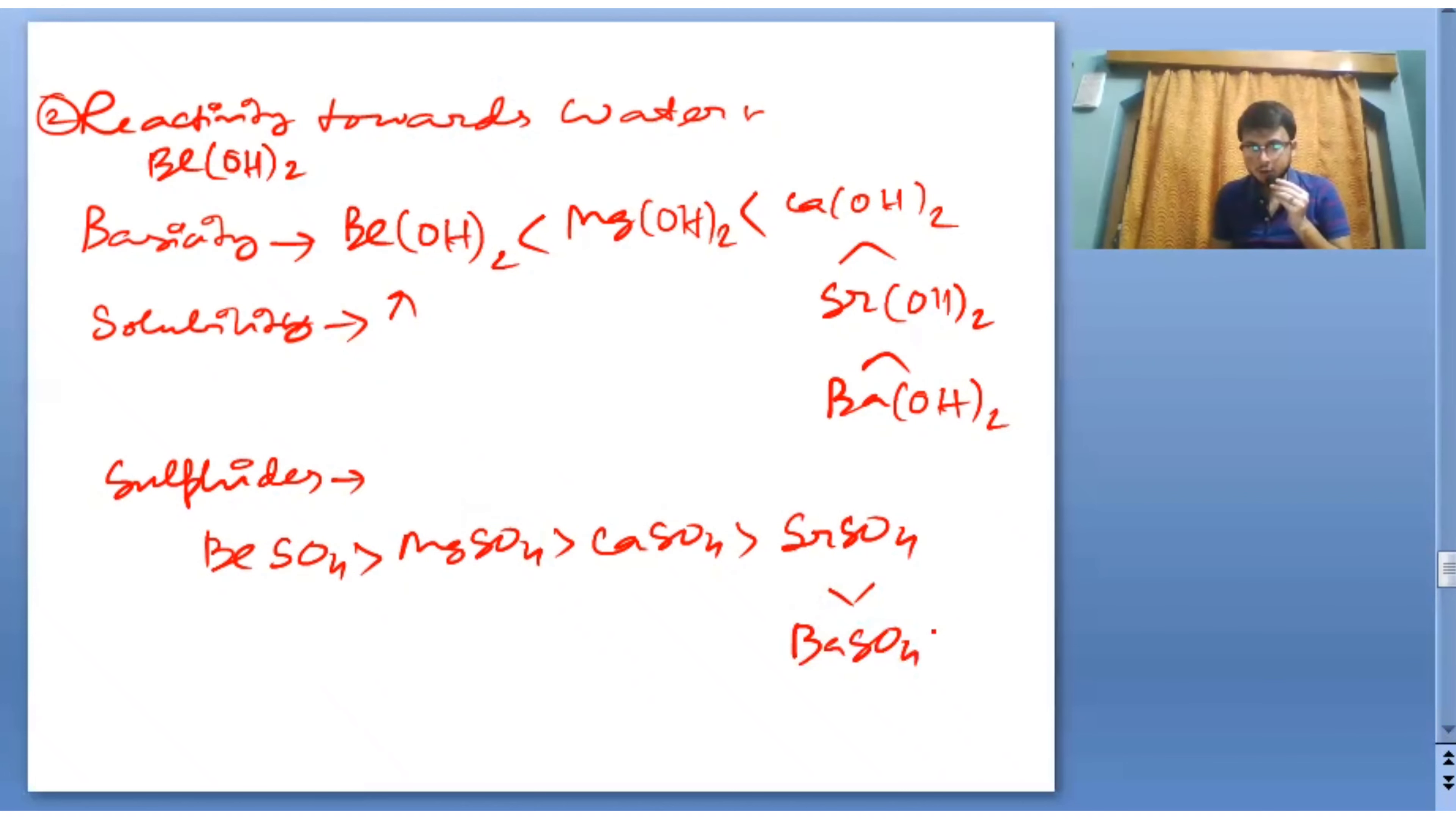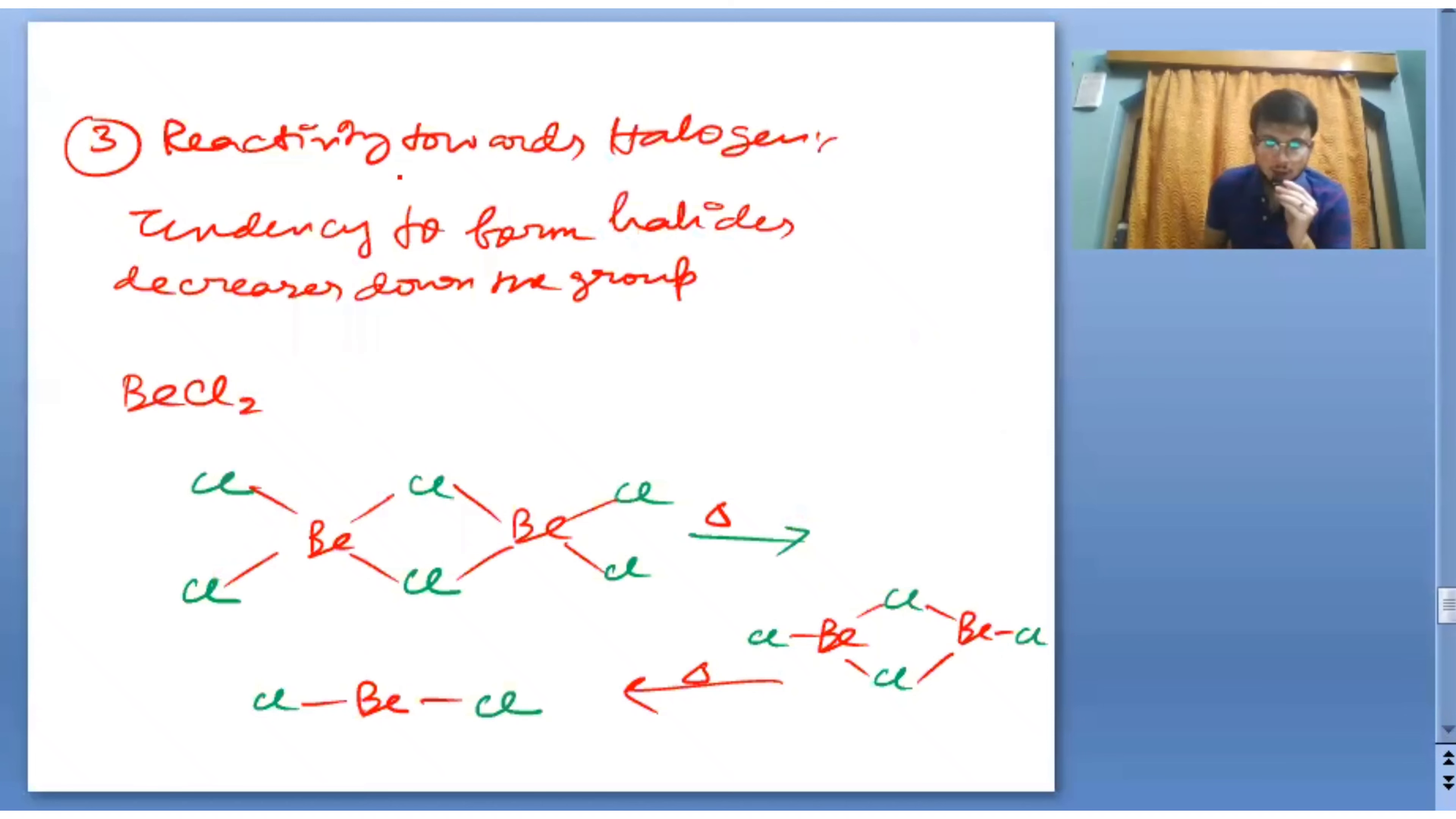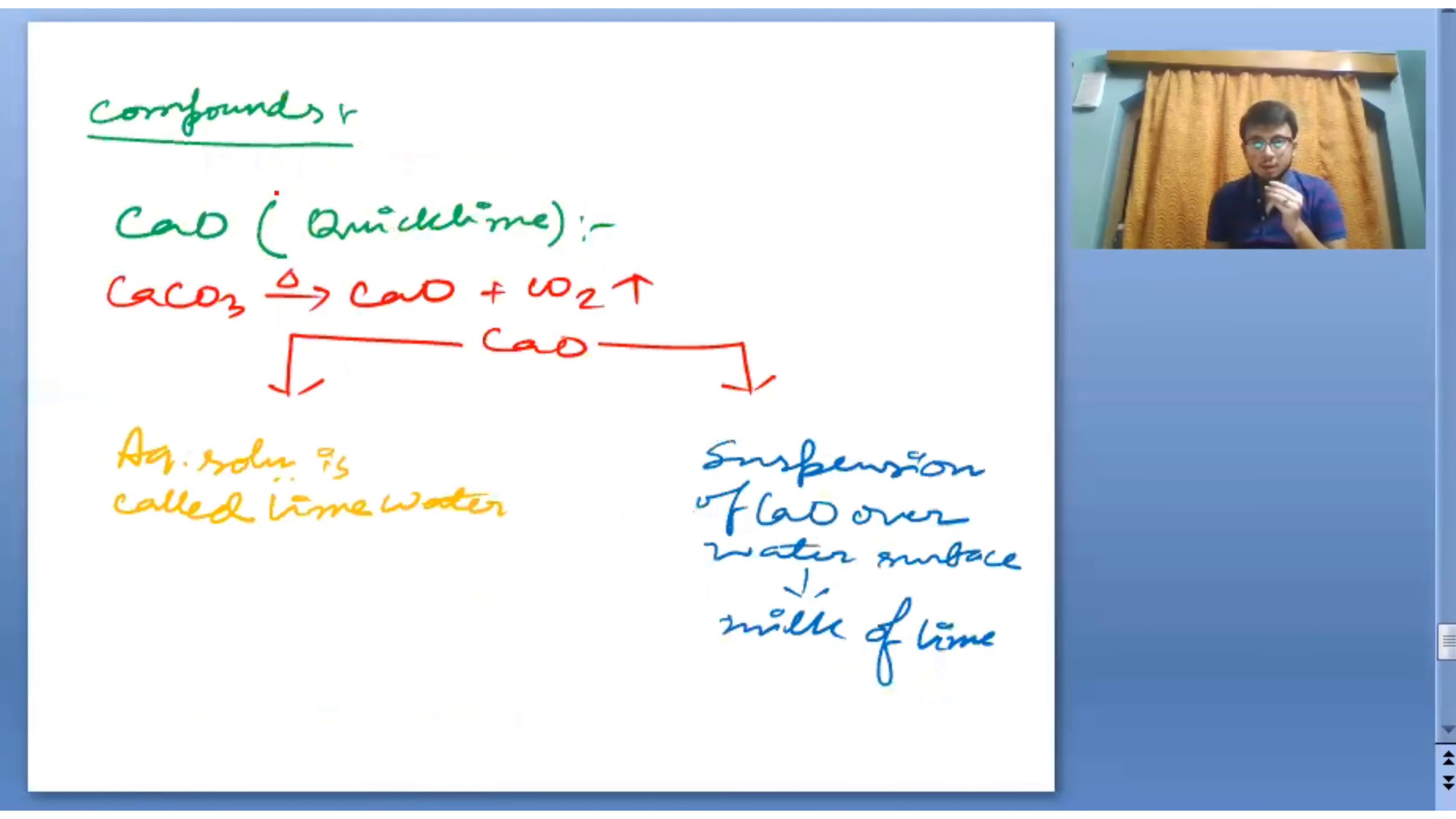And the last compound is insoluble. Next is reactivity towards halogen. Tendency to form halides decreases down the group. Here BeCl2 is special because of its structure. As you can see its primary structure is like this, but when we heat it, it becomes like this, and if we further heat it, it becomes BeCl2.